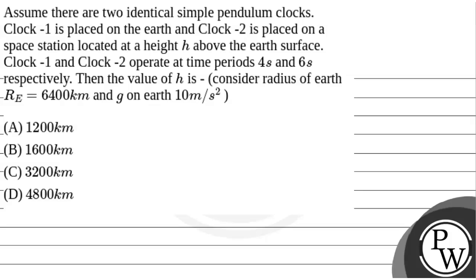Hello, Baccio. Let's read the question. The question says that assume there are two identical simple pendulum clocks. Clock 1 is placed on the Earth and clock 2 is placed on a space station located at a height h above the Earth's surface. Clock 1 and clock 2 operate at time periods 4 seconds and 6 seconds respectively.